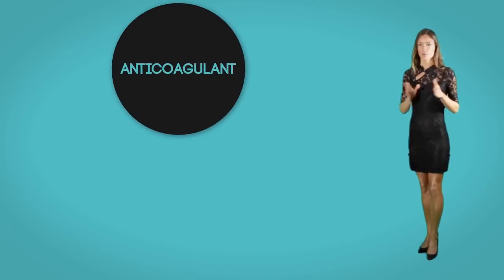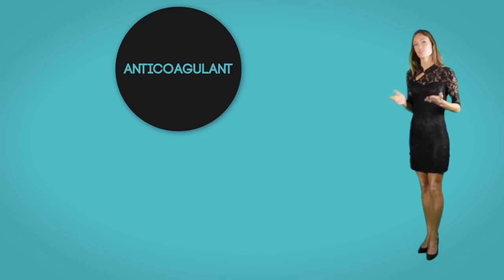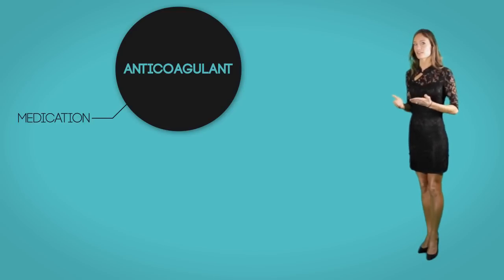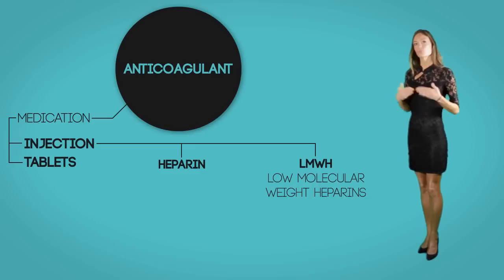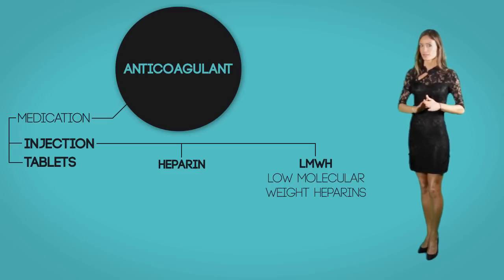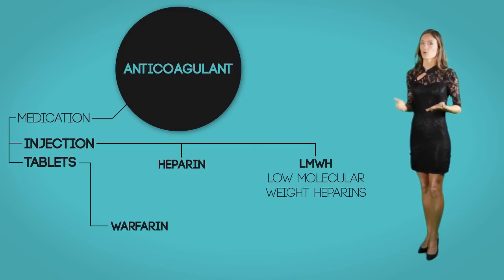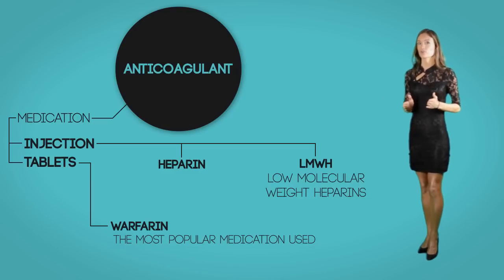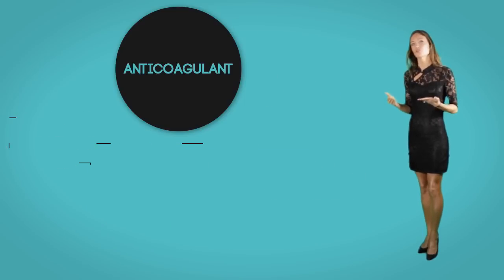Anticoagulant treatment is started immediately as soon as a PE is suspected to avoid worsening of the clot. The medication comes in two key forms: injection and tablets, with syrups available for those who cannot swallow tablets. The injectable form includes heparin, low molecular weight heparins (LMWH), or fondaparinux, administered in the initial stages as they work instantaneously. Once injections start working and diagnosis is confirmed, tablets such as warfarin or Coumadin can be started, though warfarin needs a few days to be fully effective. Anticoagulation treatment is continued for nearly three months after a PE, or longer if further risk is suspected.